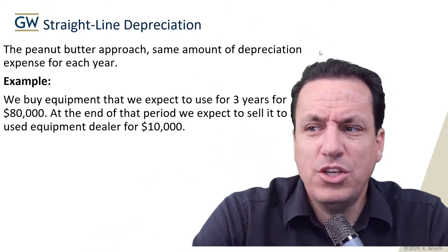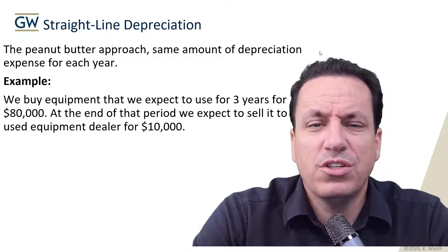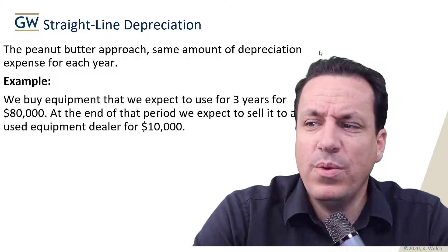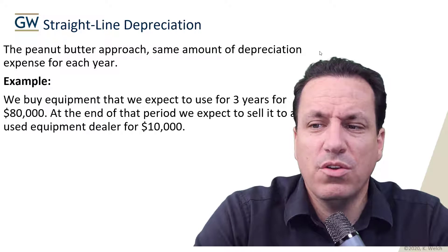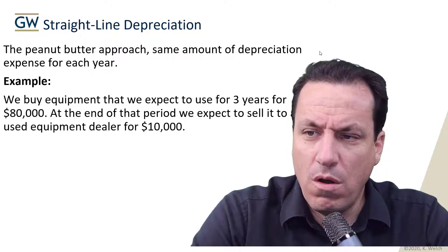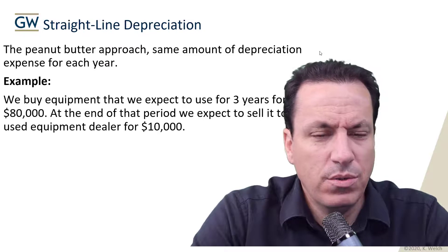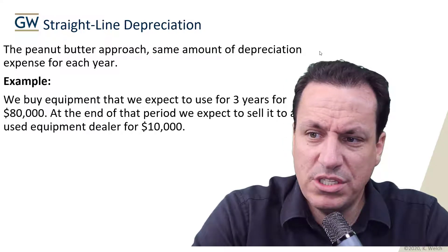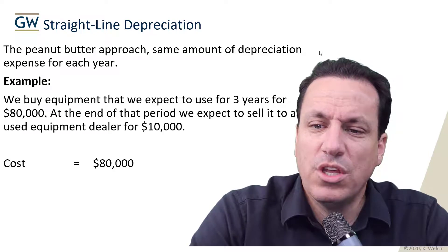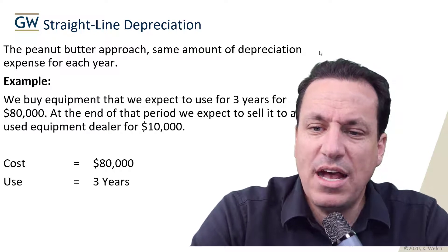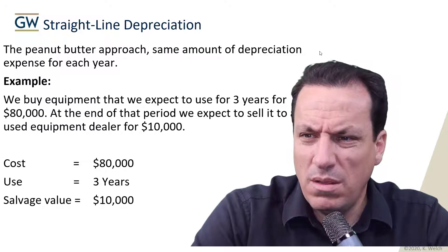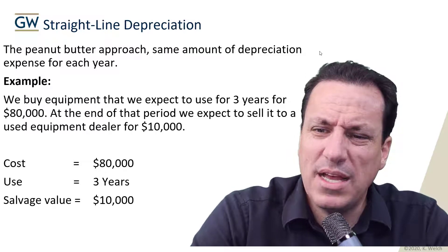Let's say we buy equipment that we expect to use for three years for $80,000. At the end of the period, we expect to sell it to a used equipment dealer for $10,000. So we'll buy it for $80,000 and sell it for $10,000 — that's the residual value. The cost is $80,000, the useful life is three years, and the salvage or residual value is $10,000.